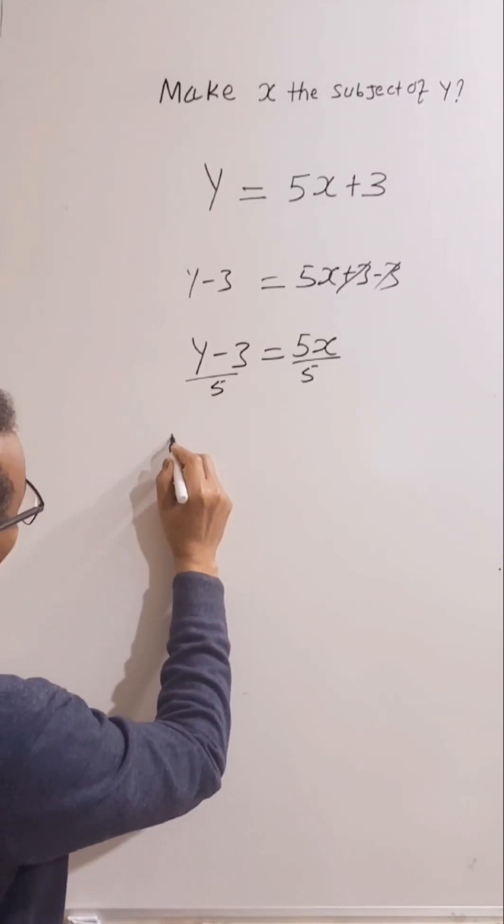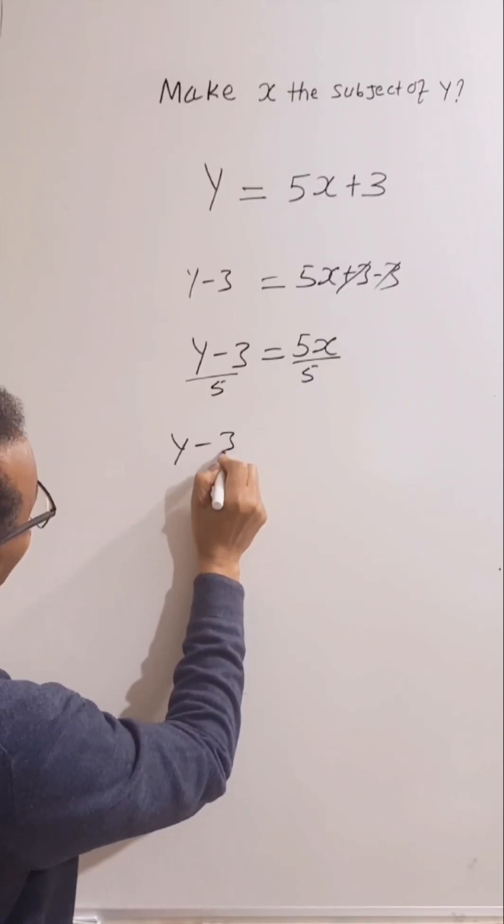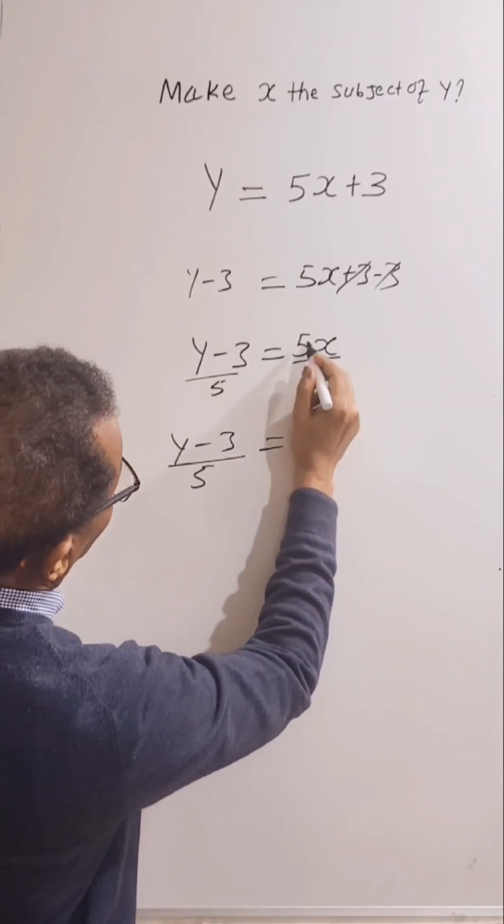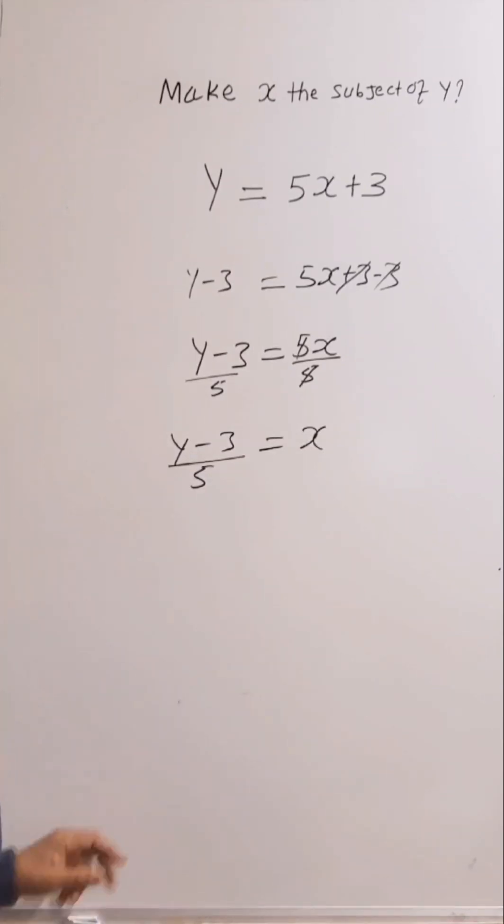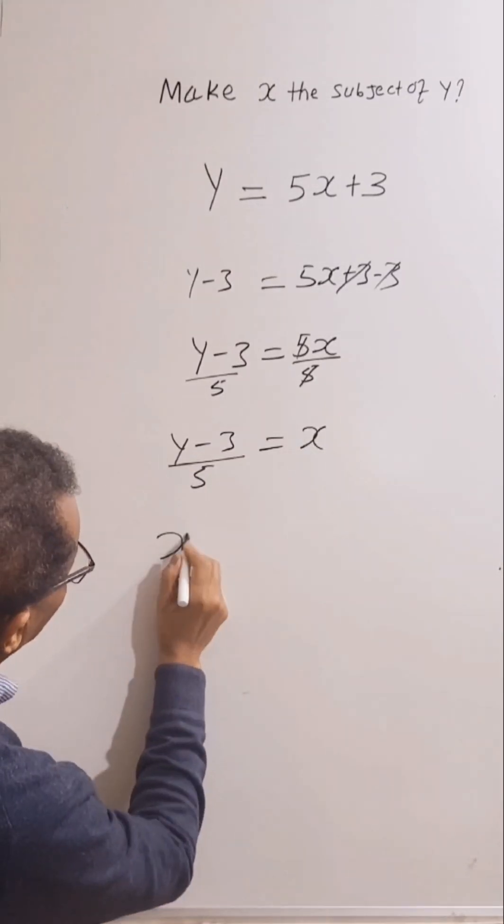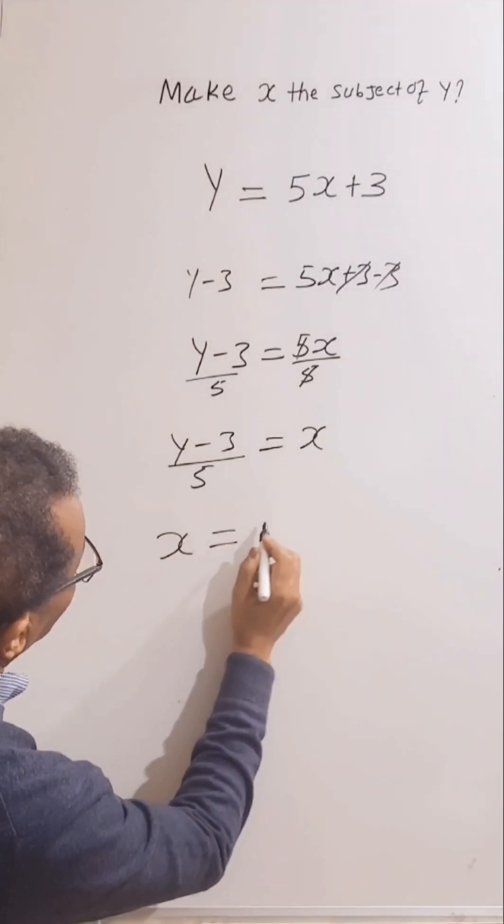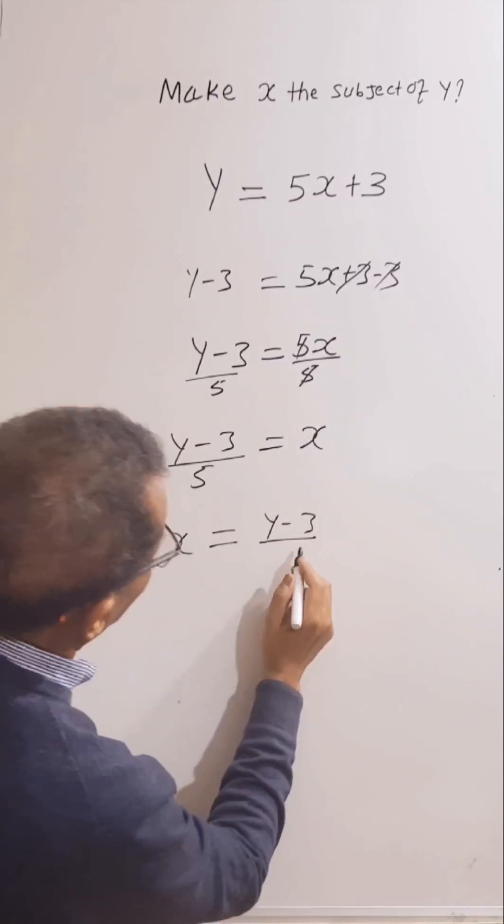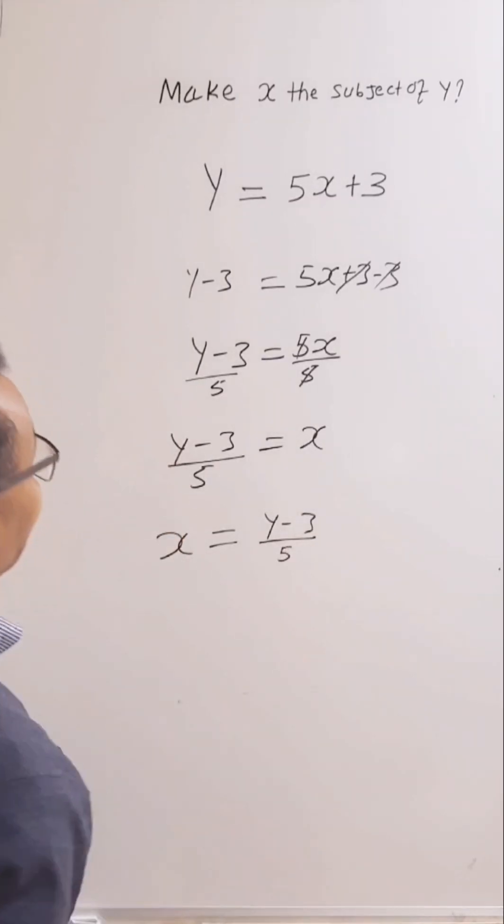So y take away 3, over 5, is equal, this will be cancelled. So from here, x is the subject now, equal y take away 3, over 5. Let's look at another one.